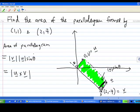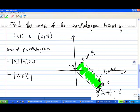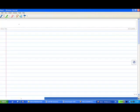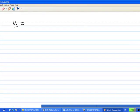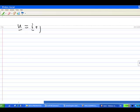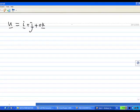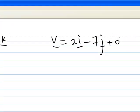Now let's apply it here. In our situation, vector u is i + j + 0k, and vector v is 2i - 7j + 0k.